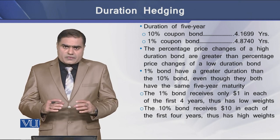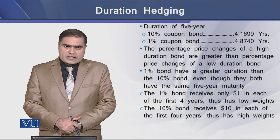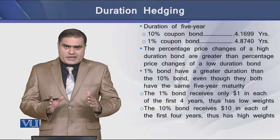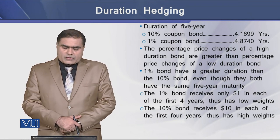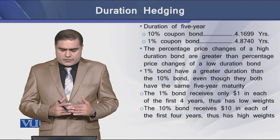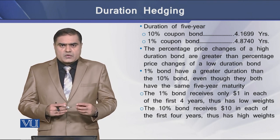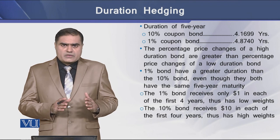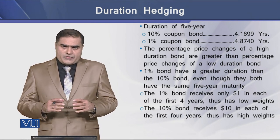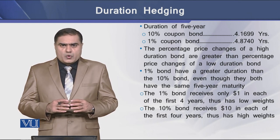The reason for this variation is that the 1% bond receives only $1 in each of the first 4 years as coupon interest. Because the final cash flow amount is relatively large, its weighted value is high, and as a result, the higher weighted value means the duration of the higher coupon bond will be less than the duration of the lower coupon bond.